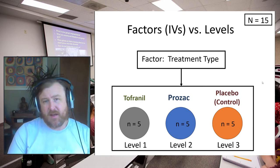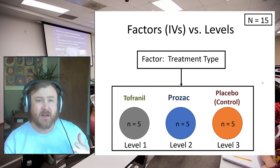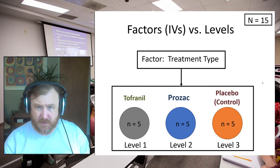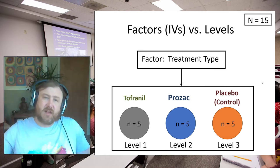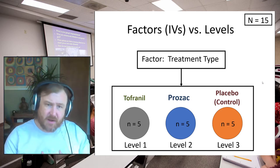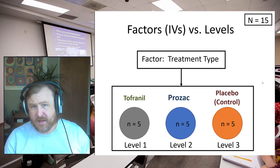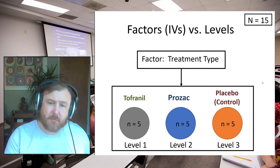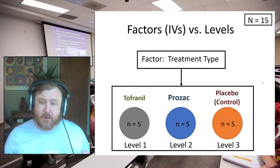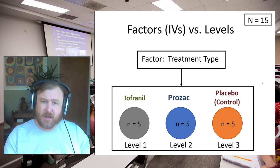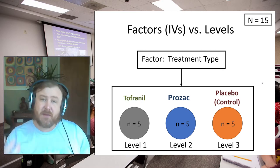One important distinction — and a very big source of confusion if not understood — is distinguishing between an independent variable (or factor, in ANOVA terminology) versus the level of an independent variable. For example, say we have some kind of treatment: we give one group tofranil (an antidepressant), another group Prozac, and a third group a placebo. Tofranil, Prozac, and placebo are the levels of a higher-order factor called treatment type. We can say that treatment type has three levels.